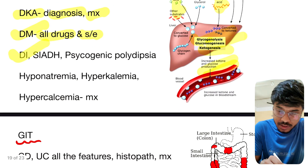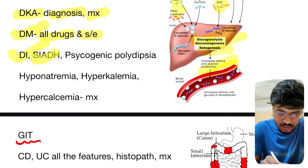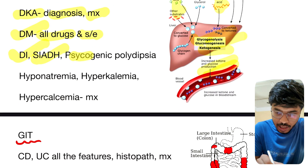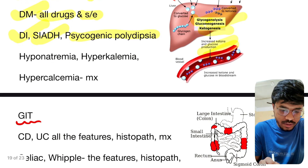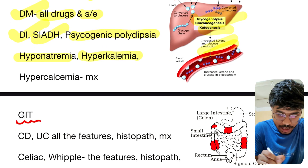Diabetes mellitus — all the drugs and side effects, very very important; this topic we discussed in pharma videos also. Diabetes insipidus, SIADH, and psychogenic polydipsia — the differences are very very important. Hyponatremia, hyperkalemia, hypercalcemia management — these three topics are extremely important.